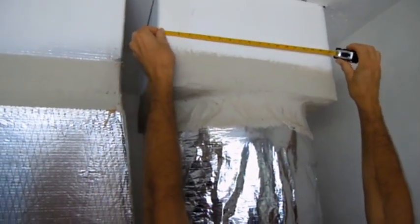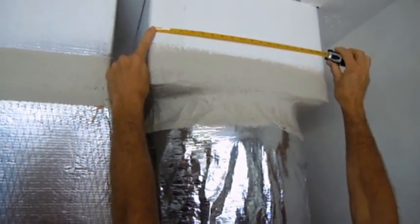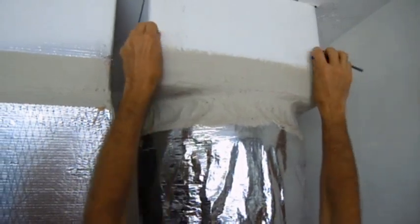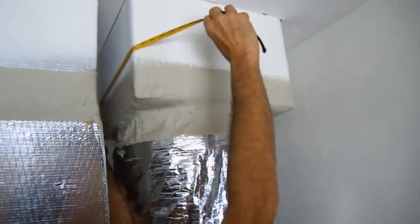So the first thing you want to do is you want to measure your square duct. And here we have 19 inches on the outside, on one end, and it's by 19 inches over here as well.